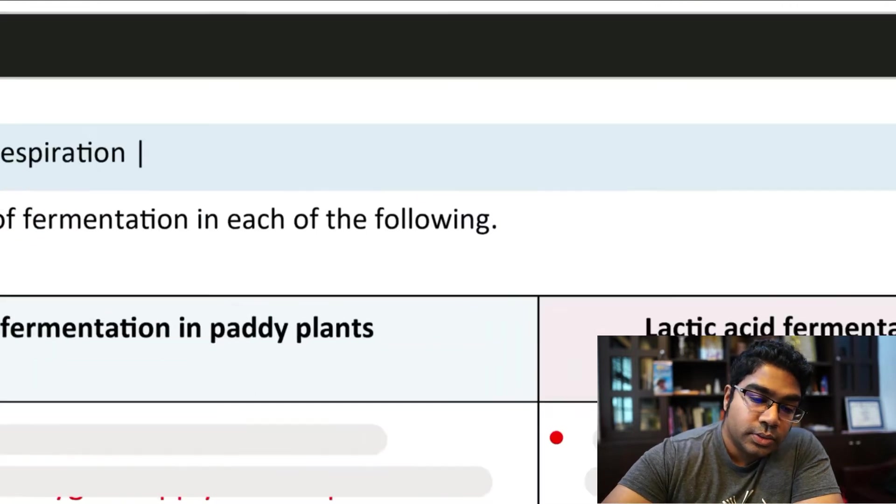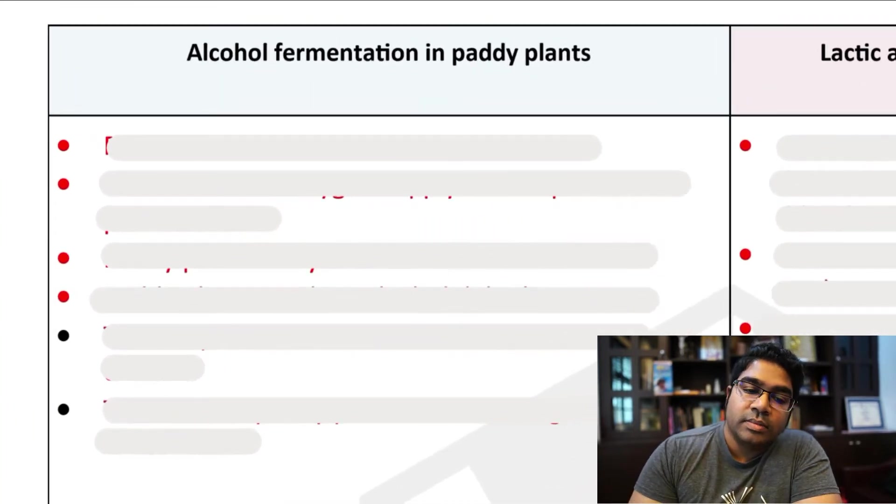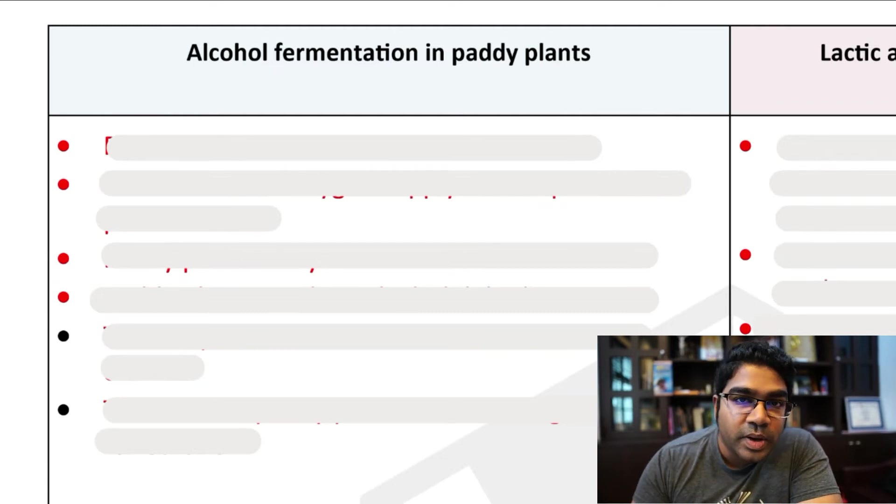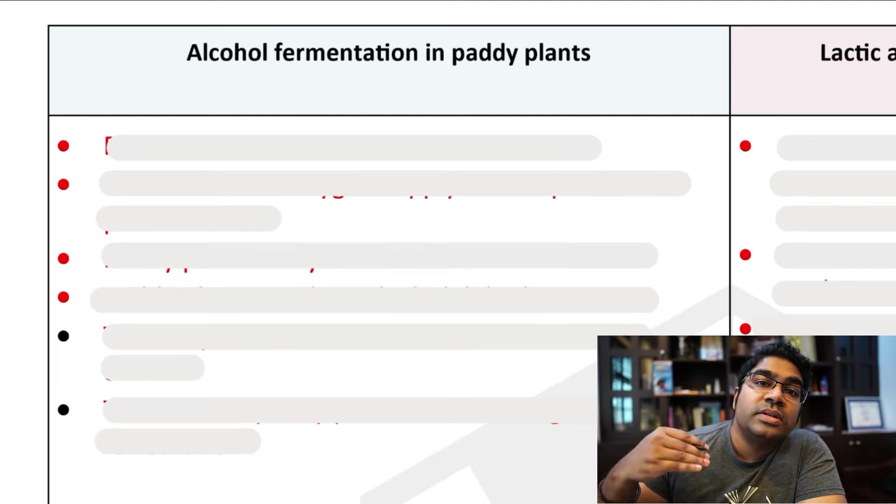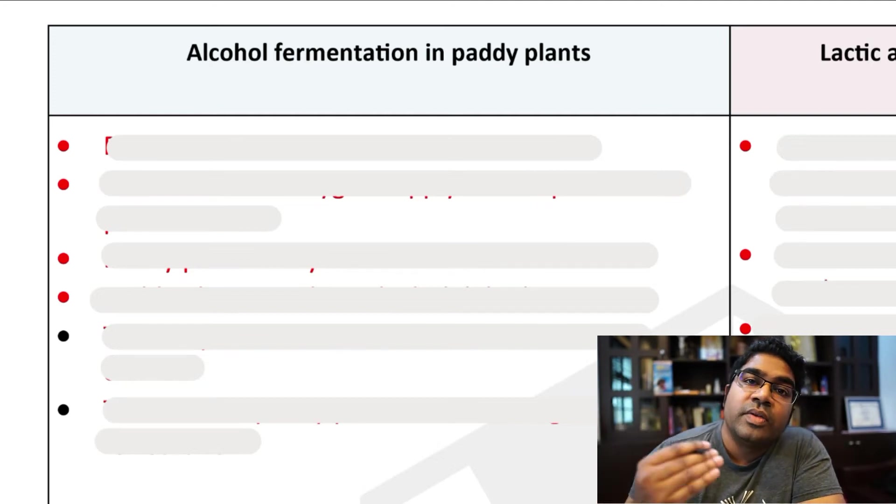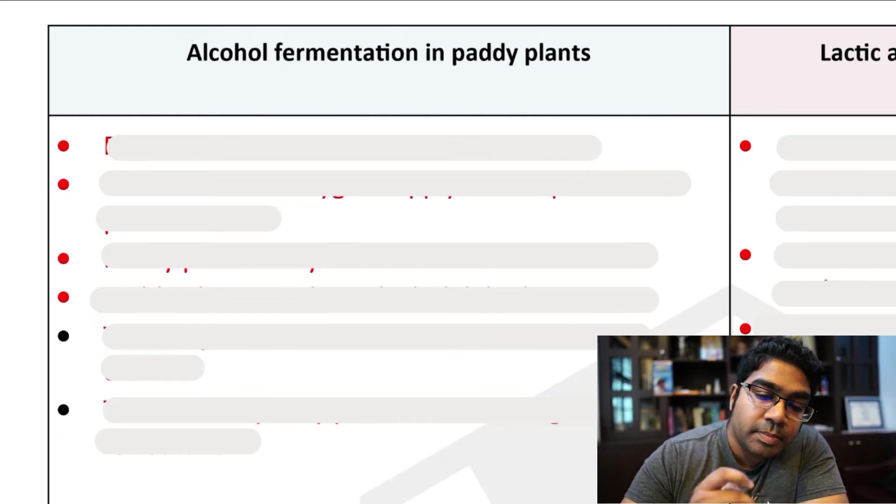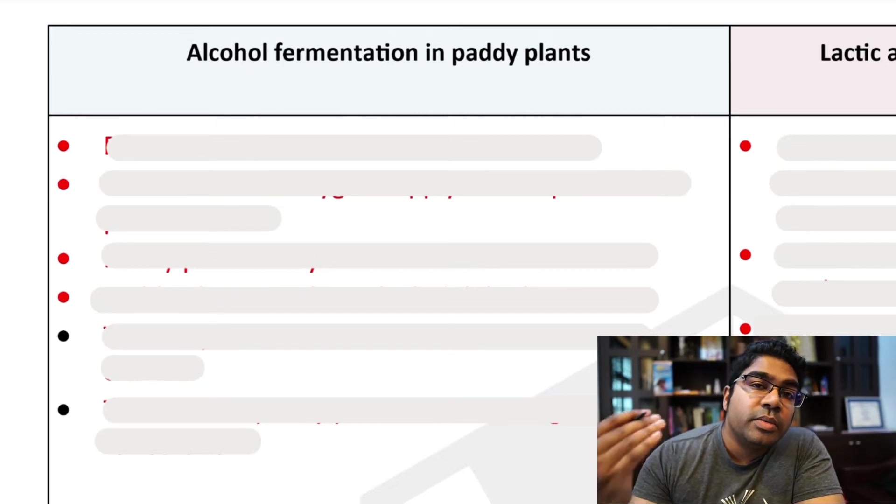Now let's go to alcohol fermentation by paddy plants. This fermentation process is usually the choice when there is limited or no oxygen. There are some exceptions where some organisms are obligate anaerobes where they can only survive by anaerobic respiration, meaning respiration in conditions with limited or no oxygen supply. But for paddy plants, they are not obligate anaerobes. They actually undergo aerobic respiration.